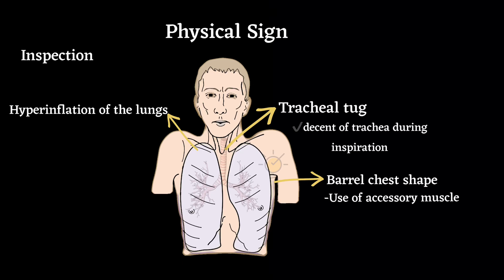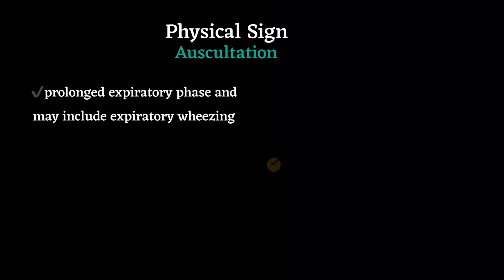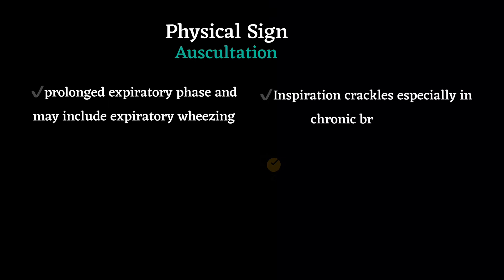On auscultation, there is a prolonged expiratory phase and may include expiratory wheezing. Inspiratory crackles, especially in chronic bronchitis, may accompany infection, but if persistent, raise the possibility of bronchiectasis.